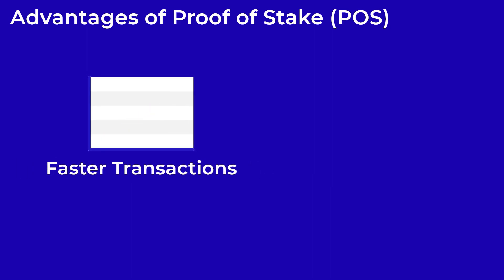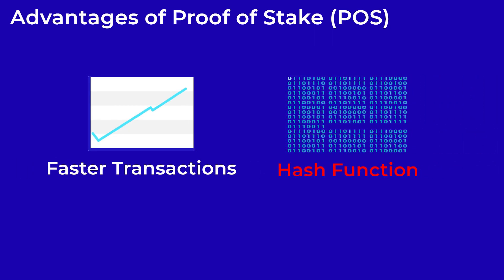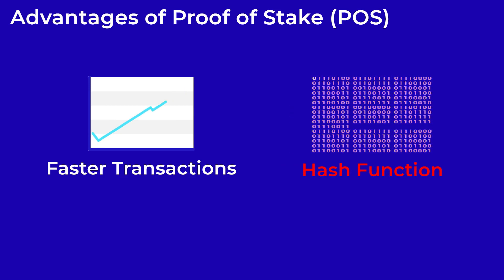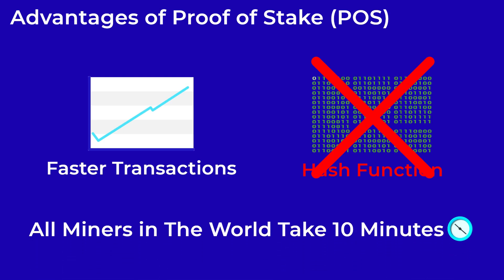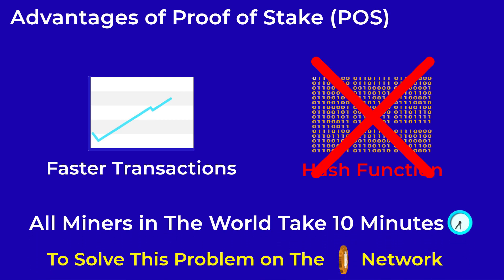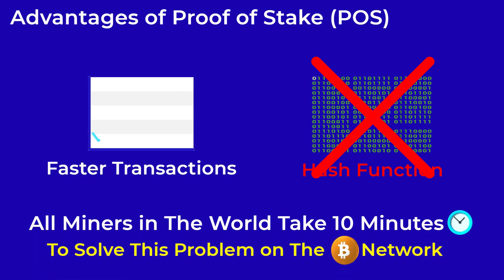Another advantage of using proof of stake is considerably faster transactions compared to proof of work. This is mainly because proof of stake eliminates the need for solving a complex mathematical problem that all miners in the world take 10 minutes to solve, as in the case of the Bitcoin network.